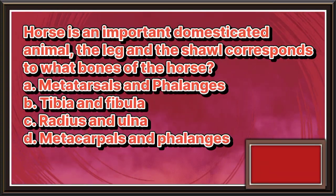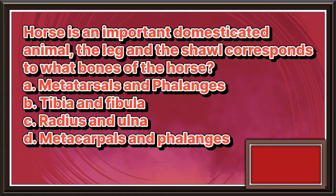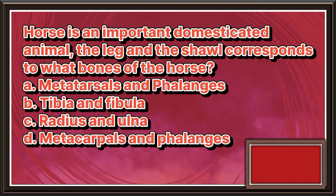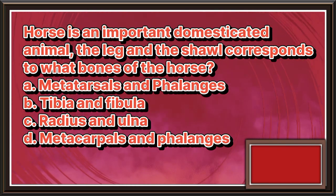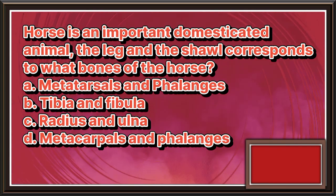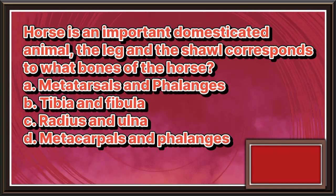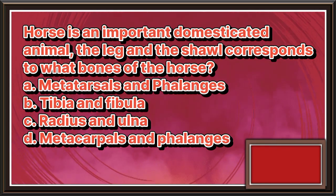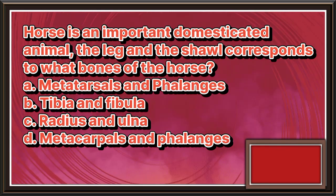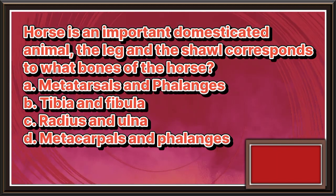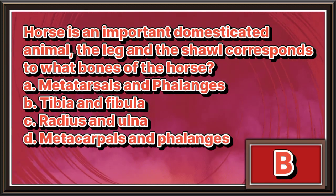Horse is an important domesticated animal. The leg and the shawl correspond to what bones of the horse. A. Metatarsals and phalanges. B. Tibia and fibula. C. Radius and ulna. D. Metacarpals and phalanges. The answer is letter B.